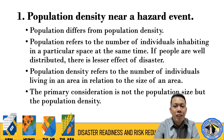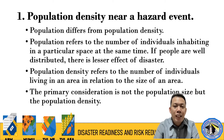In the COVID-19 pandemic, to lessen the transmission of the virus, we implemented physical distancing. The more people crowd together, the more physical contact occurs — skin contact, clothing contact, shared air. That allows the virus to transfer from one person to another, whether carried by air or by touching infected surfaces. That is why we always implement social distancing. So population density near a hazard event is a key factor.